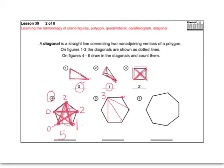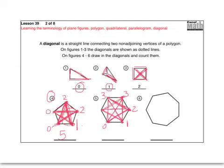From the first corner I can connect to three corners — three new diagonals. Then from the next corner, one is already connected, so that gives two new diagonals. From the next corner, two are already connected, giving one new diagonal. The last two corners have all diagonals already connected — zero new each. Adding three, three, two, and one gives a total of nine diagonals.